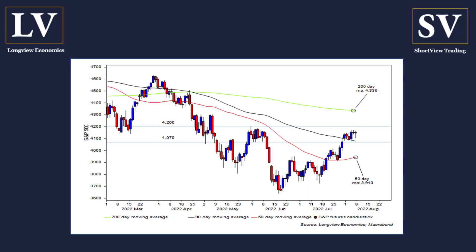So how much more upside is there in this equity market? As you can see from this chart, we're currently at key levels, with the S&P broadly trading in a range this past week of between 4070 and 4200, which is the congestion area from early June. Do we test the top of that range and maybe break above it? Or is this equity market about to roll over?